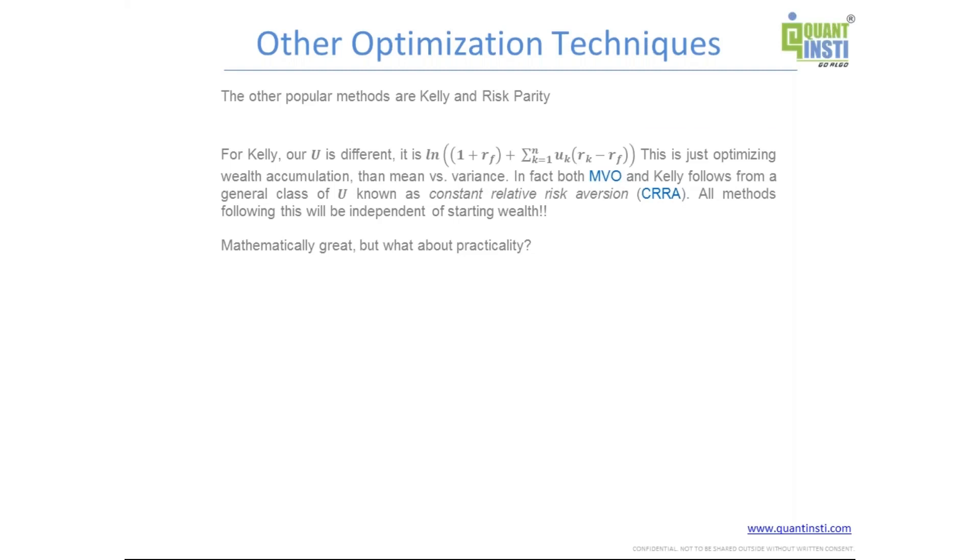So it looks complicated, but it's really not. What it's trying to do is that it's trying to optimize or maximize your terminal wealth. So each, for a multi-period, for each period, you are accumulating wealth. One plus R1 into one plus R2 into one plus R3 and so on.